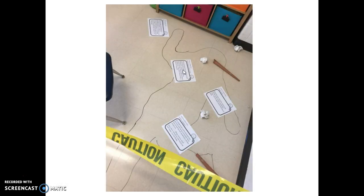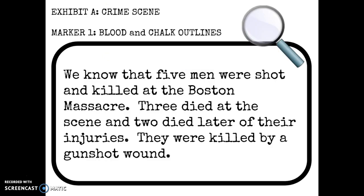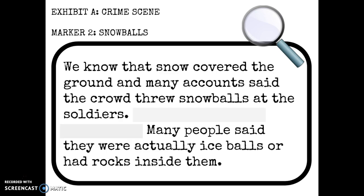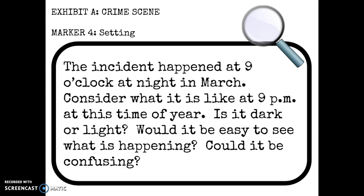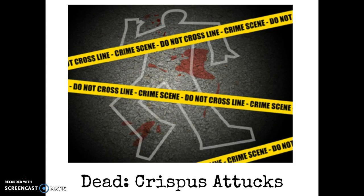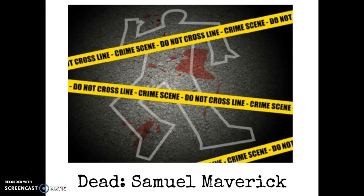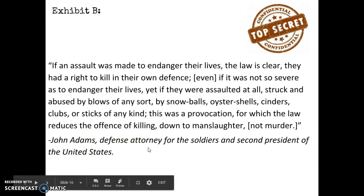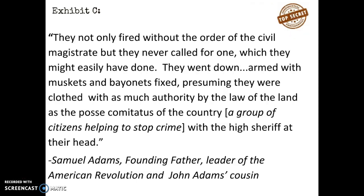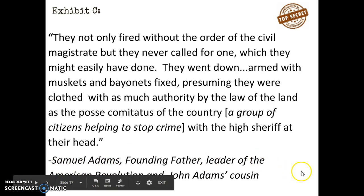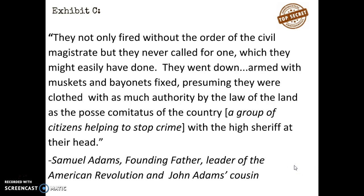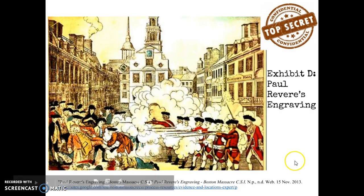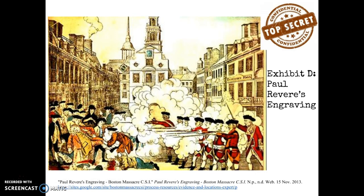This is Exhibit A — kids were able to go to the crime scene in the classroom and look at the evidence. Those cards are at the following locations — don't forget you can pause and rewind to look at these. These are the five men that were killed: Crispus Attucks, Samuel Gray, James Caldwell, Samuel Maverick, and Patrick Carr. Exhibit B is a quote from John Adams, the defense attorney for the soldiers. Exhibit C is by Samuel Adams, the founding leader of the Sons of Liberty, a protest group against British policies. Exhibit D is an engraving by Paul Revere showing his perspective of what happened at Boston the night of the massacre.